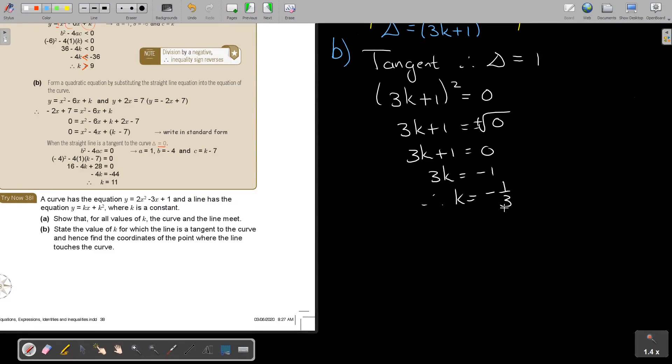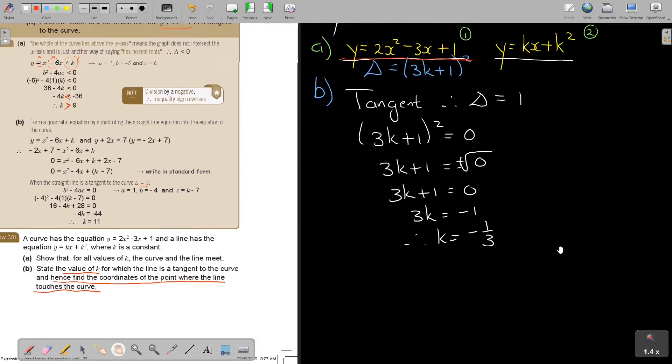Now, if the value of K is negative 1 third, so state the value of K, that was what's standing there, for which the line is tangent to the curve, and hence find the coordinates of the point where the line touches the curve. So basically, what they want me to do now, and I just move it a bit, I must first substitute this value of K into this equation.